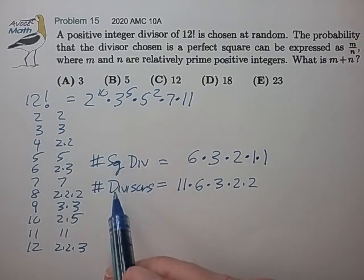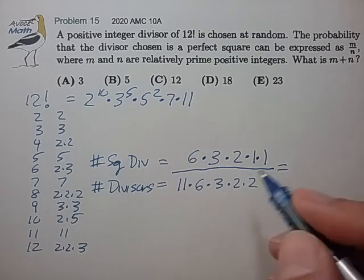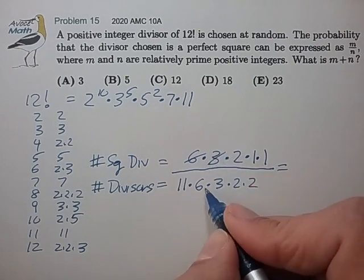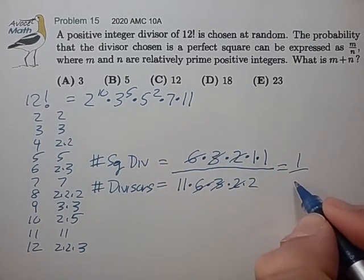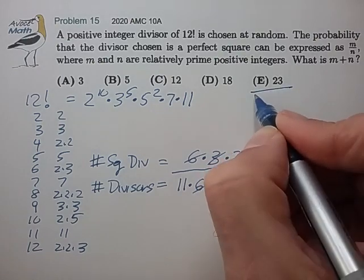And the probability is just the ratio of these two counting results. And we get a lot of cancellations. That's nice. 1 over 22. 1 plus 22 is 23 choice E.